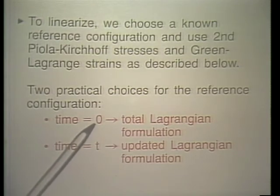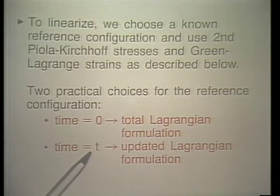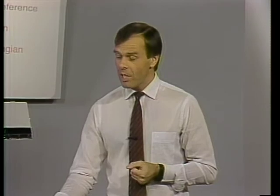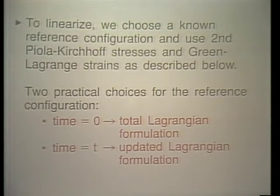We have already calculated all configurations from time 0 to time t. One might ask why not choose the configuration at t minus delta t as a reference. While possible, doing so loses the advantages of both the updated and total Lagrangian formulations, leaving only disadvantages. Therefore, we generally choose either the original configuration at time 0 or the configuration at time t as the reference configuration.